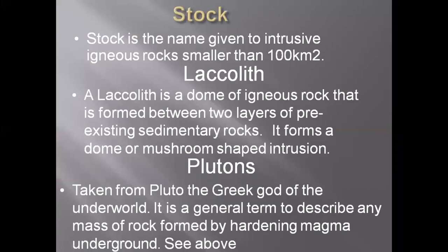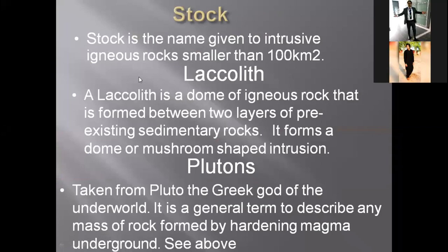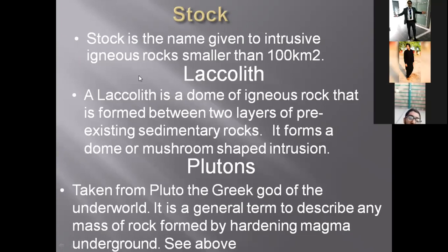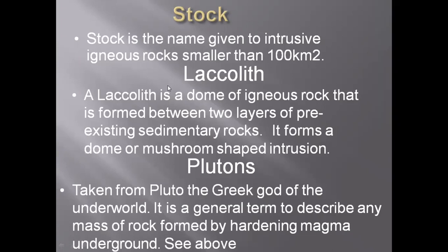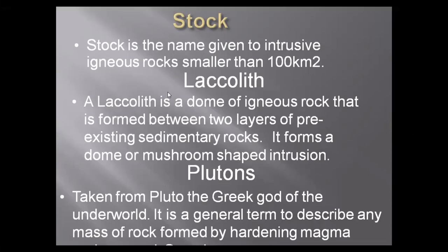A stock is also an intrusive body but smaller than 100 square kilometers. A laccolith is normally an igneous rock with a dome-shaped or mushroom-shaped intrusion. Plutons are any rock that solidifies under the surface of the Earth — the name is taken from the Greek word Pluto.